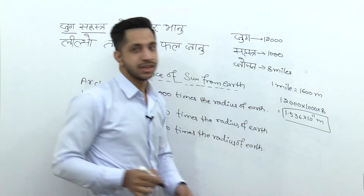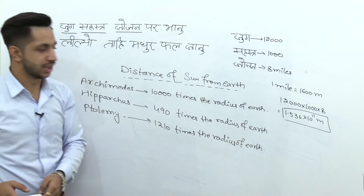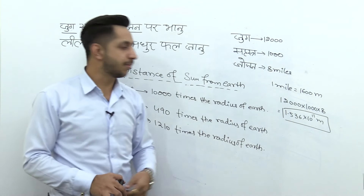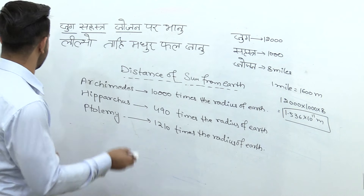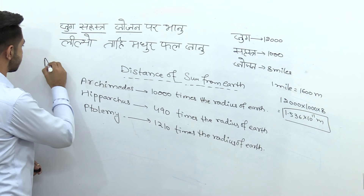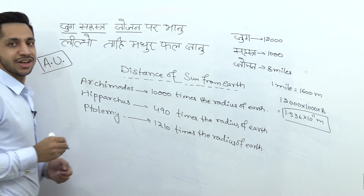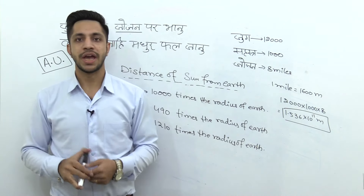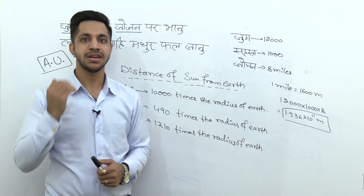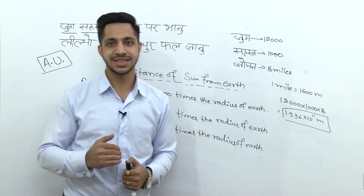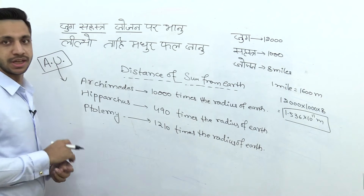Toh yeh toh baat rahi humari sun ke distance ki from earth via Hanuman Chalisa. Aap dekhe kya aata hai — aur astronomical unit ki jo value hoti hai, woh bhi compare karte hain.